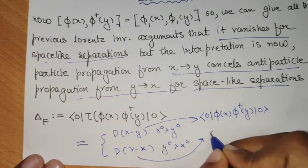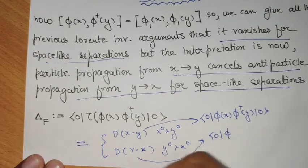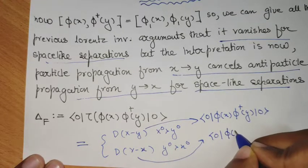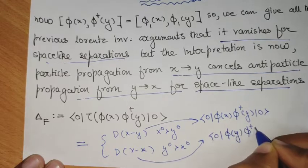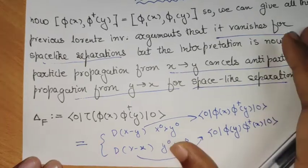But this dx minus y is 0 phi x phi dagger y 0. And this y minus x is 0, phi y phi dagger x 0.